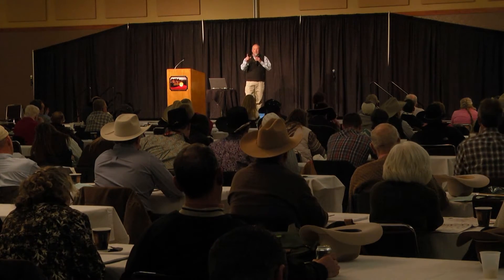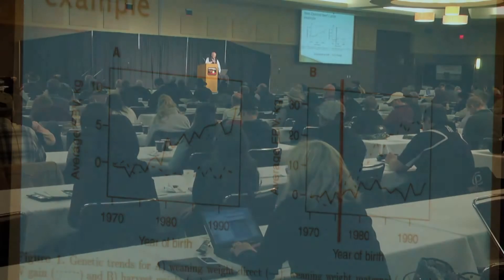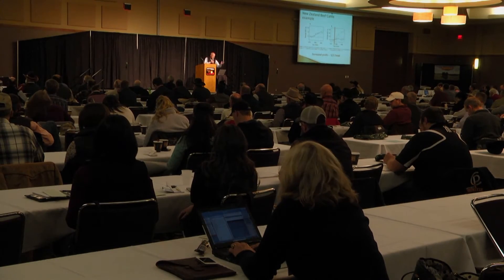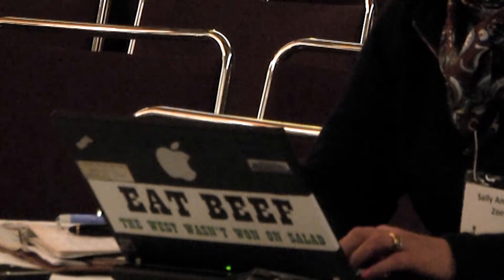Producers need to think about what makes them money and what costs them money in their specific operation. Then they take that list of traits that biologically influence their profitability and look at the indexes available. For instance, the Angus Association has a number of different indexes — figure out which of those indexes has traits similar to what makes a difference to your profitability, then that's the index to use. The same is true for any breed association, since a number of breeds produce multiple indexes.